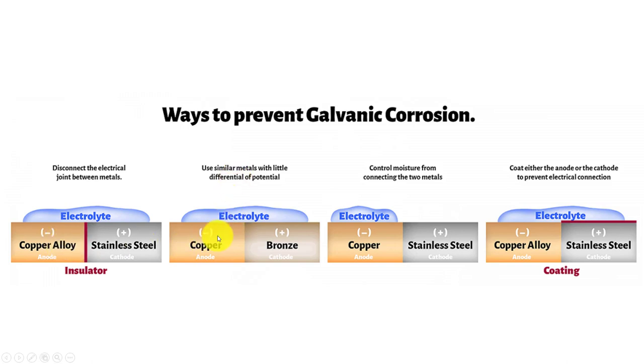Other things we can do is get materials like copper and bronze that are very close to each other in the galvanic cell, and we're probably not going to have a big potential and a lot of corrosion happening there. Or keep the moisture or liquids from making contact and making that bridge from one metal to the other.